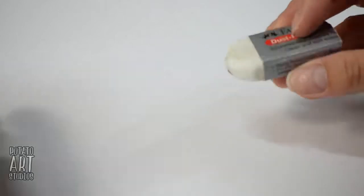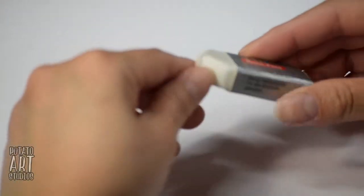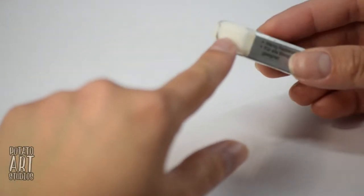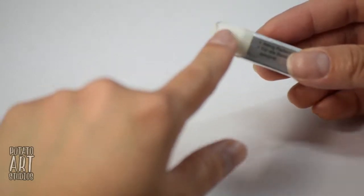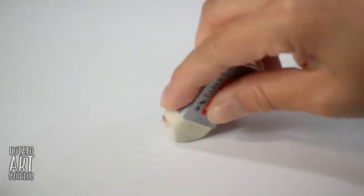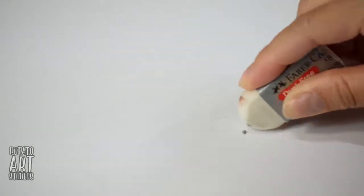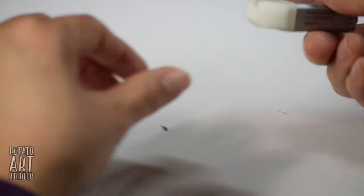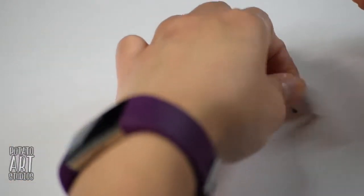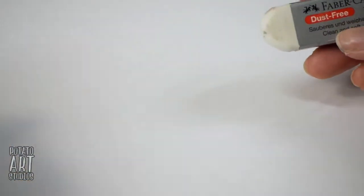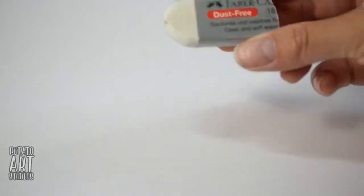So with a normal eraser, you're probably all familiar with, a normal eraser actually generates shavings. As you're applying friction with the eraser on your surface of the paper, part of the eraser comes off with the pigment. And so it's a different type of erasing.